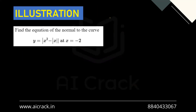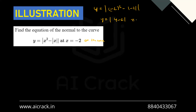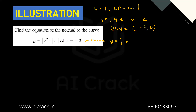Let's solve this example: find the equation of the normal to the curve y = |x²| - |x| at x = -2. At x = -2, y = |(-2)²| - |-2| = |4| - 2 = 2. So the point (a, b) is (-2, 2). Since x is negative, we can open the modulus: y = x² - (-x) = x² + x.